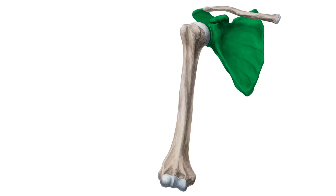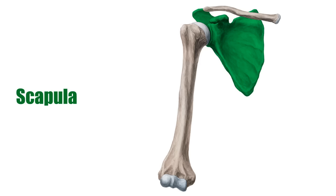Next, the scapula connects the clavicle to the humerus. Seen here from the anterior view, the scapula is a flat, irregular bone, and is highly mobile.